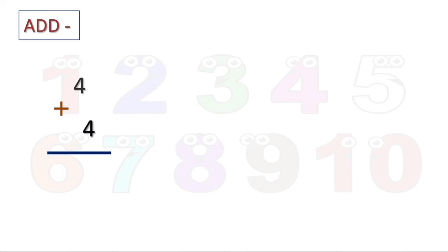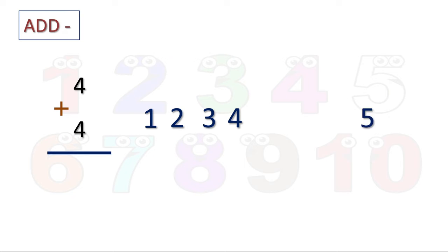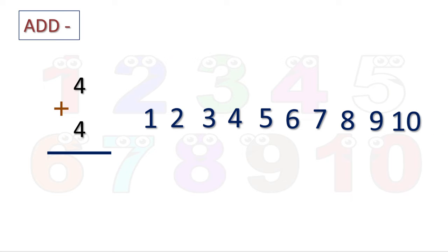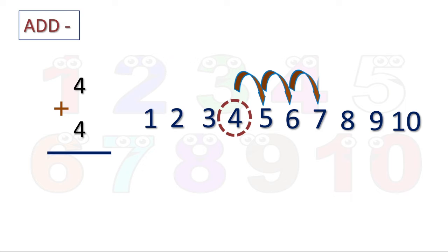Next: 4 plus 4. Let us write numbers 1 to 10. Our number is 4, so we encircle 4. Then we move 4 numbers in the forward direction: 1, 2, 3, and 4. The fourth number is nothing but 8 — that is our answer. So 4 plus 4 is equal to 8.